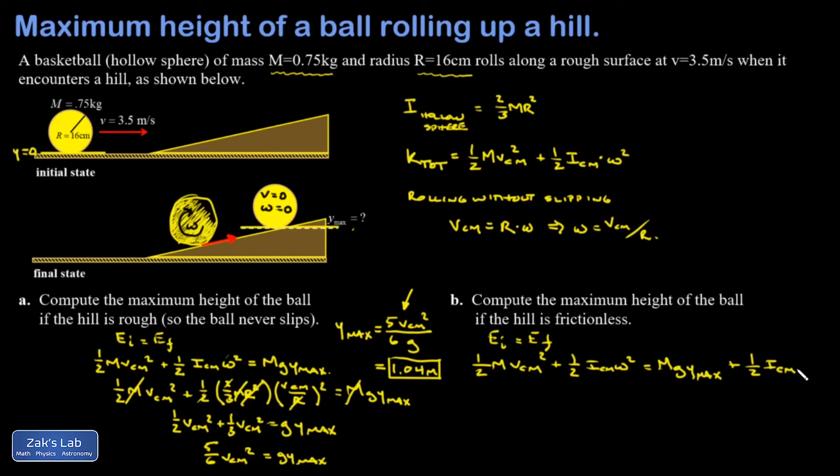Because the surface can apply no torque because it's frictionless, my rotational kinetic energy terms cancel out. My masses cancel out of both sides and I'm going to solve for Y max.